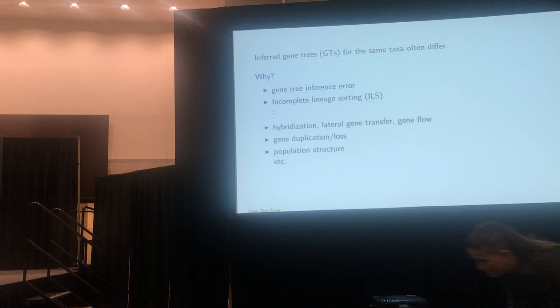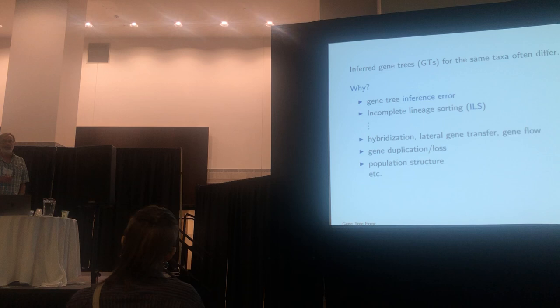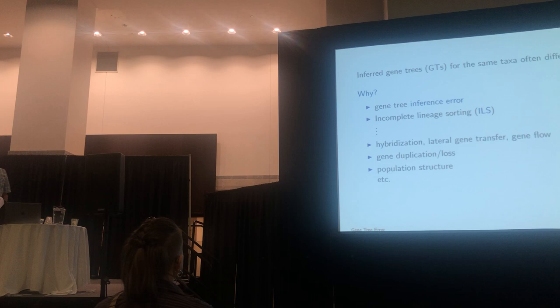There's a host of other problems as well: hybridization, lateral gene transfer, gene flow, gene duplication and loss, and population structure — all of which might have led to discordance in your gene trees. I'm not going to address all of these, but I think in any analysis it's important to think about them.